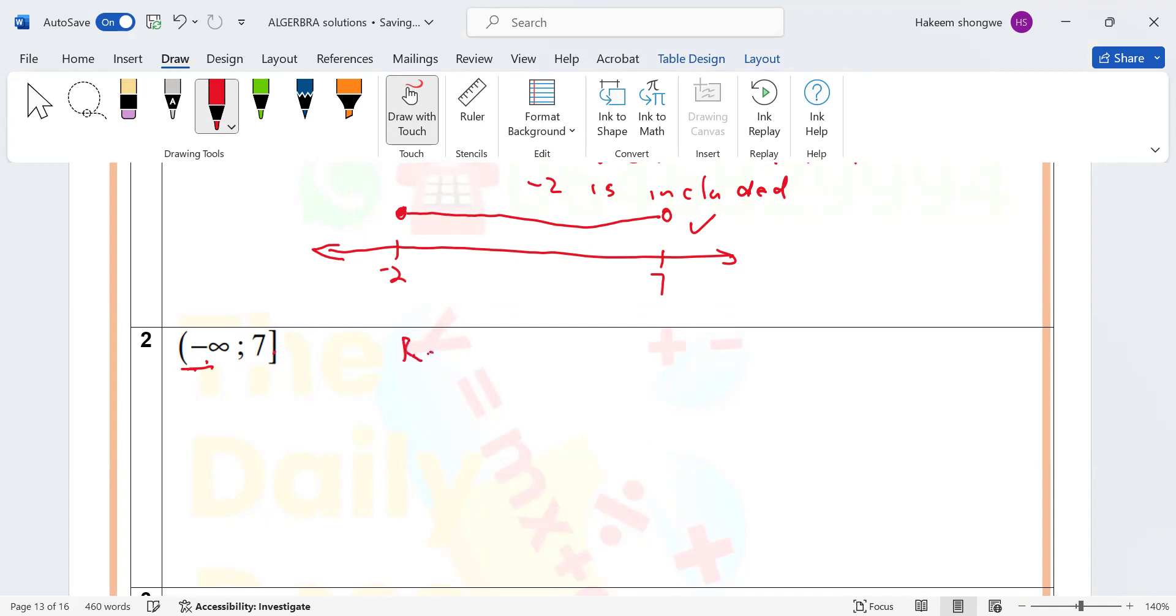If you wanted to write this, you can write it this way: these are real numbers less than or equal to seven. Or you can say real numbers between negative infinity to seven.